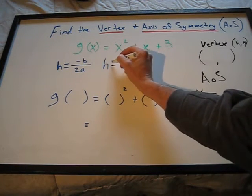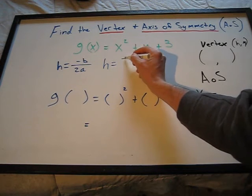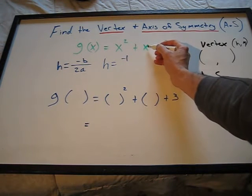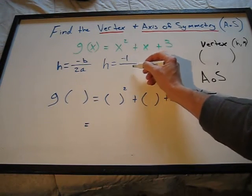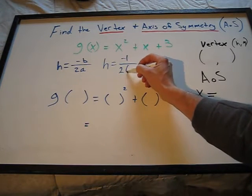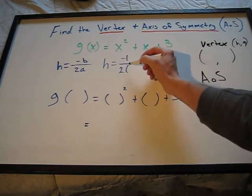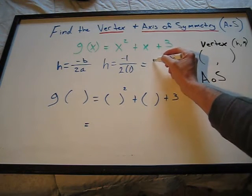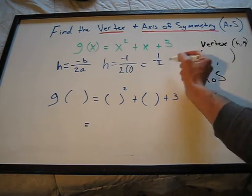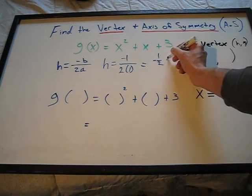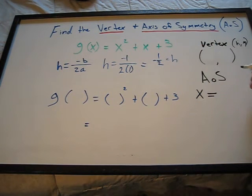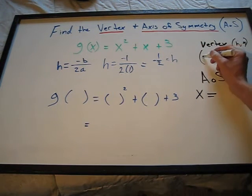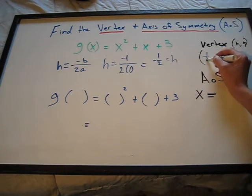h equals negative 1, which comes from our b term, over 2 times a, which is 1. And that equals negative 1 half equals h. We can put that over here for our vertex as our h term.